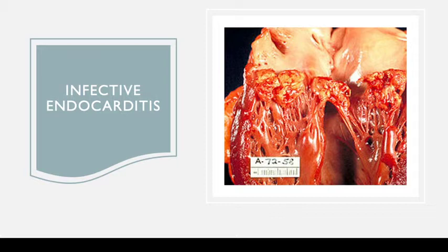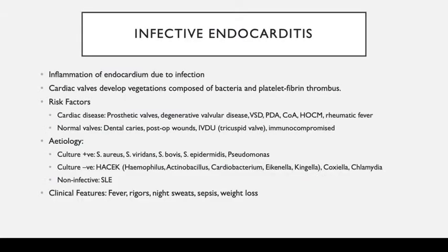The next topic is infective endocarditis. Here we have a picture of the vegetations seen in IE. Infective endocarditis is infection leading to inflammation of the endocardium, causing cardiac valves to develop vegetations. People at risk include those with existing valve problems, prosthetic valves, or congenital heart disease — VSD, aortic coarctation, patent ductus arteriosus, HOCM, and people with rheumatic fever. Even with a normal valve, poor dental hygiene, IV drug use, or being immunocompromised puts you at risk.